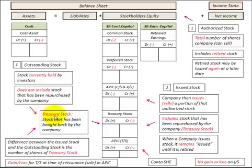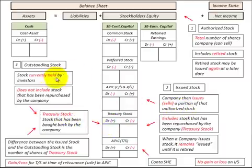This Treasury stock is the stock that's been bought back by the company and it's held in this Treasury stock account. The difference between our issued stock and our outstanding stock is the number of shares of Treasury stock.